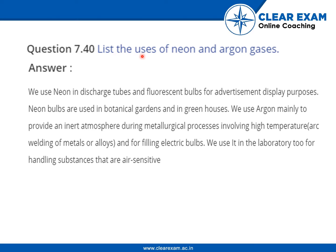The question is: list the uses of neon and argon gases. These are basically Group 18 elements. We use neon in discharge tubes and fluorescent bulbs for advertisement display purposes. Neon bulbs are also used in botanical gardens and in greenhouses.